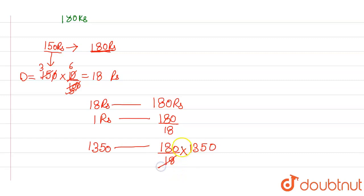180 divided by 18 is 10 times. 10 into 1,350 will give 13,500.